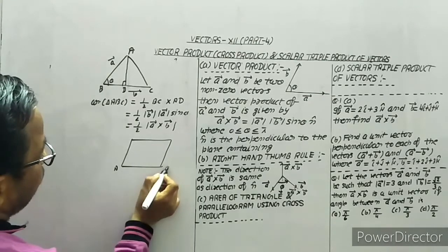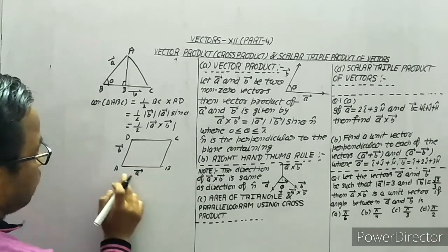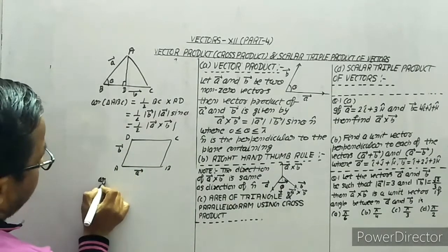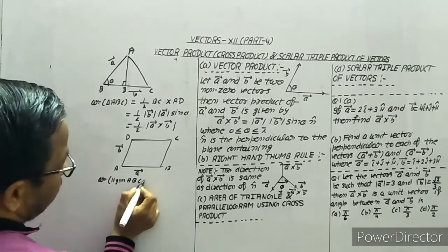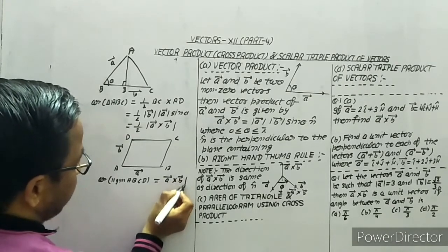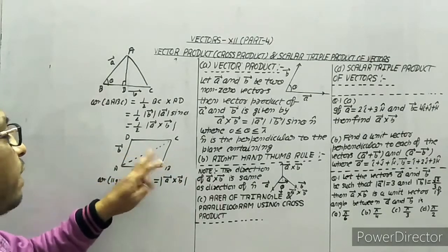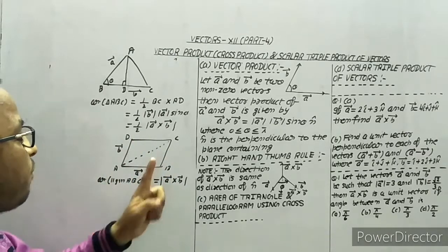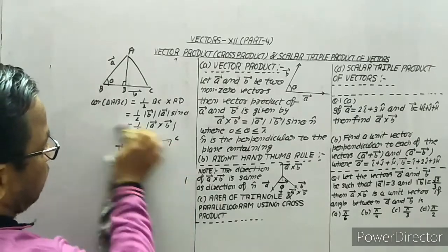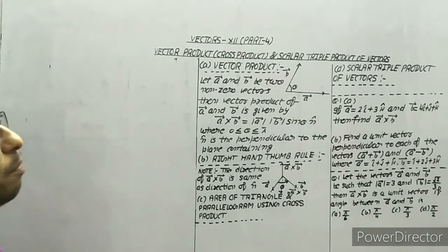Similarly, for the area of parallelogram ABCD, where adjacent sides are represented by vector a and vector b: drawing a diagonal divides the parallelogram into two triangles. Summing both triangle areas gives area of parallelogram ABCD equals magnitude of a cross b. This is the way to find the area of a triangle and area of a parallelogram.